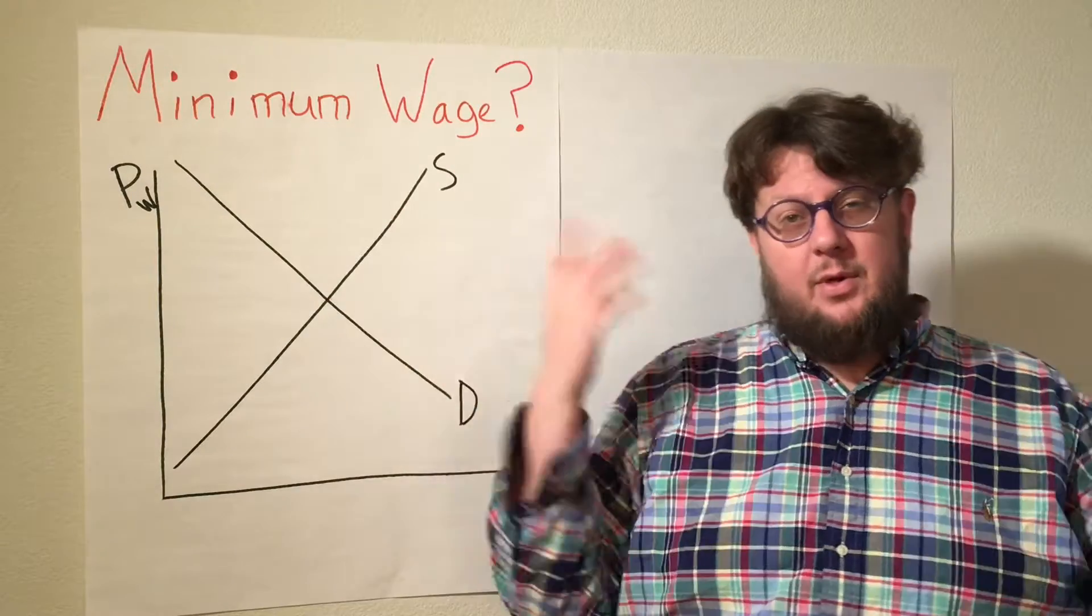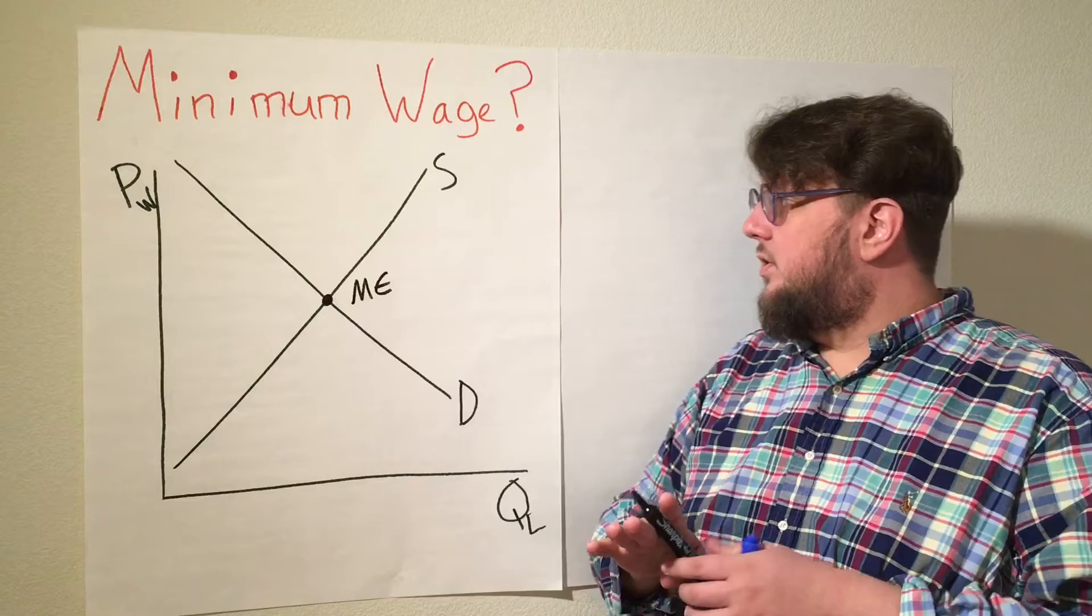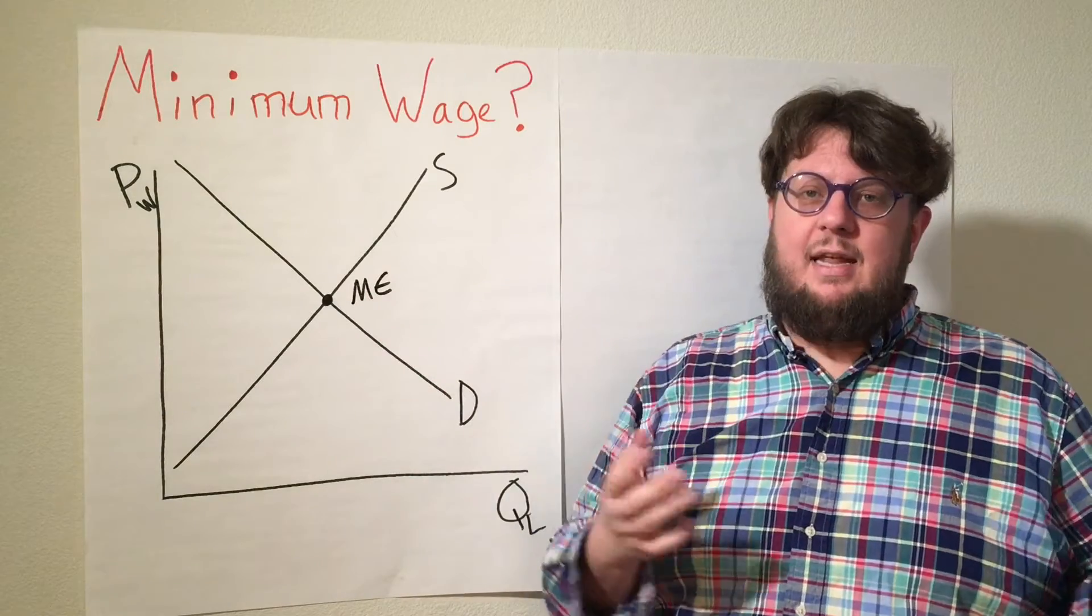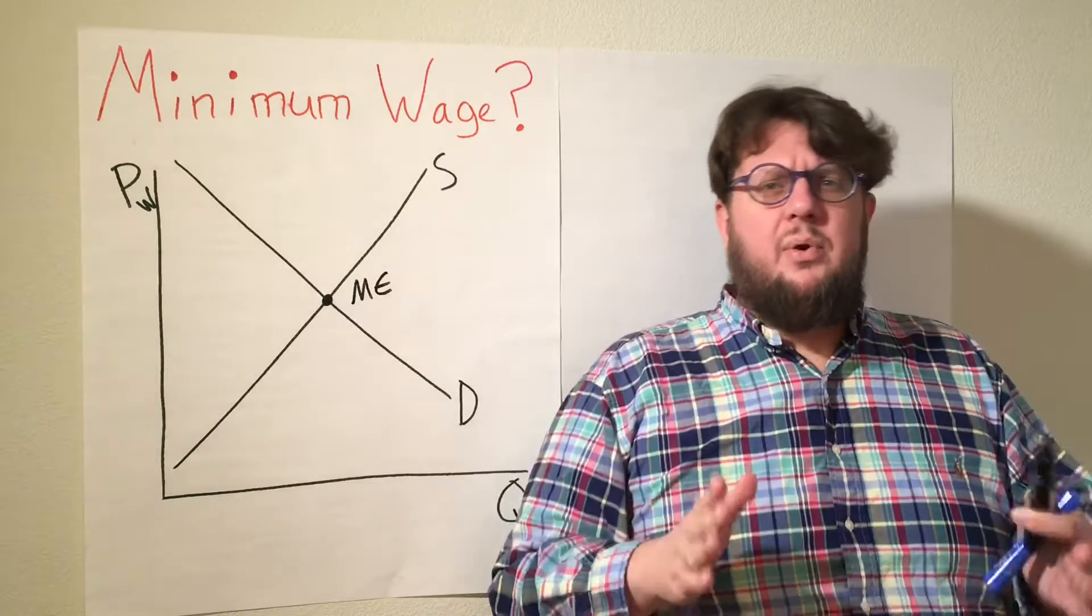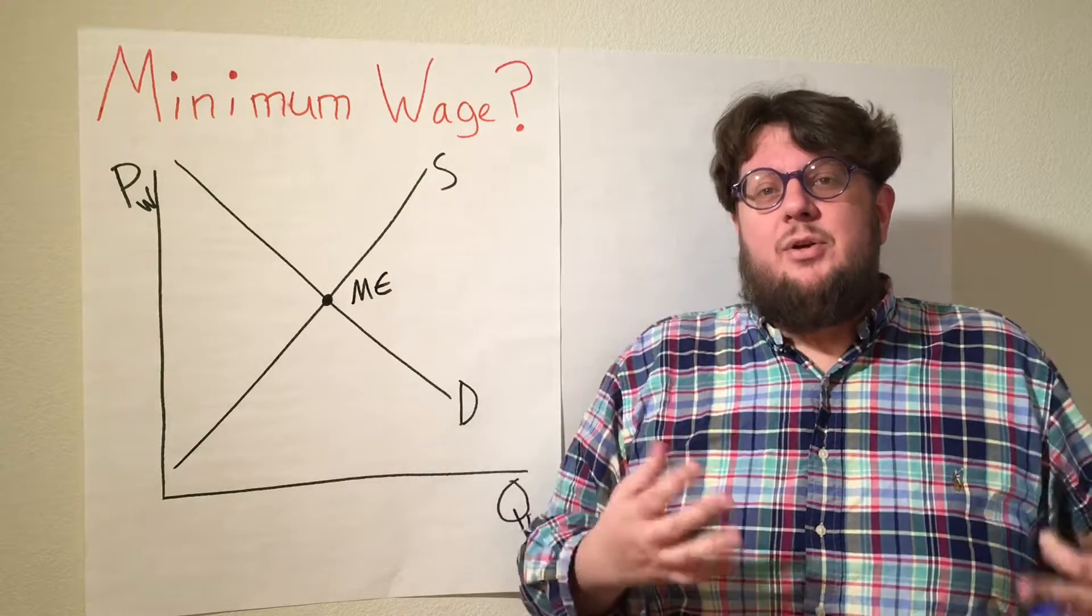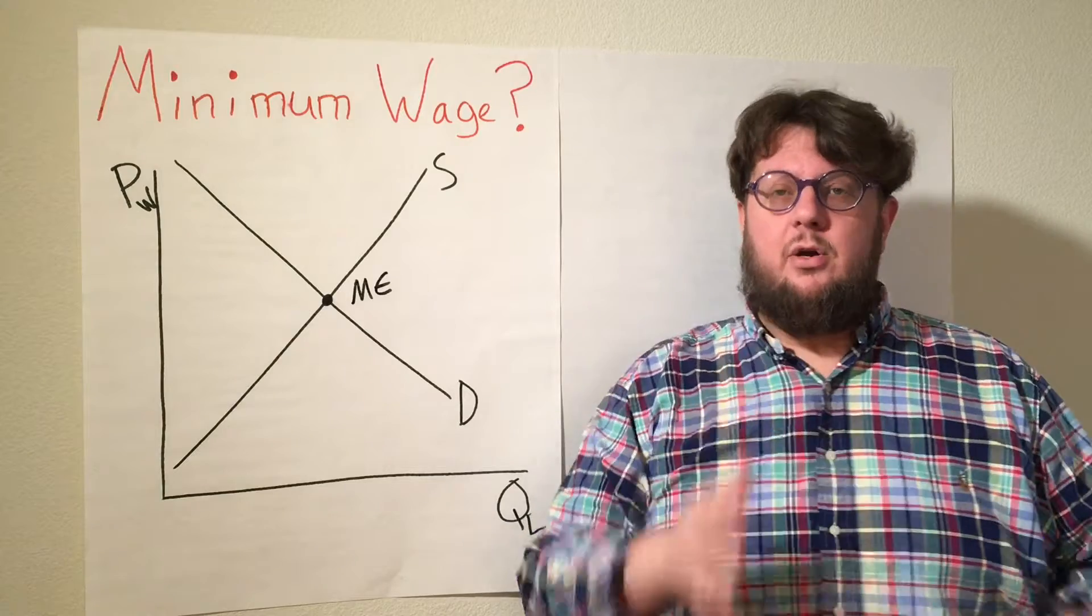They meet in the middle at what's called the market equilibrium. And this is where the buyers and sellers agree on a wage and a quantity of work. Just so you don't get confused, the purchasers are the businesses and the suppliers are the workers in this case, since we are talking minimum wage.